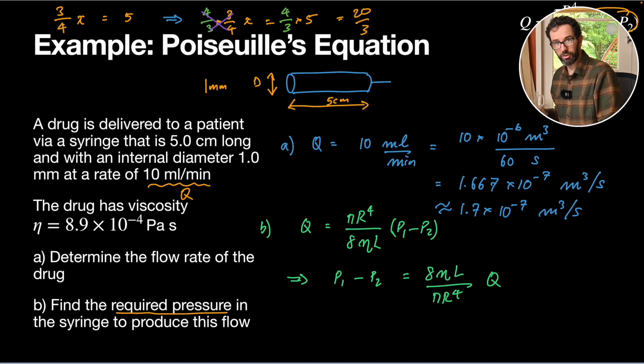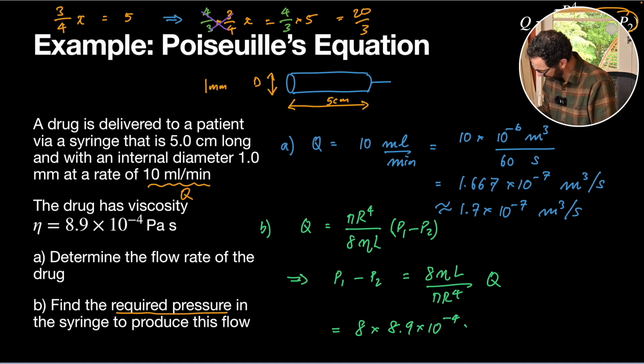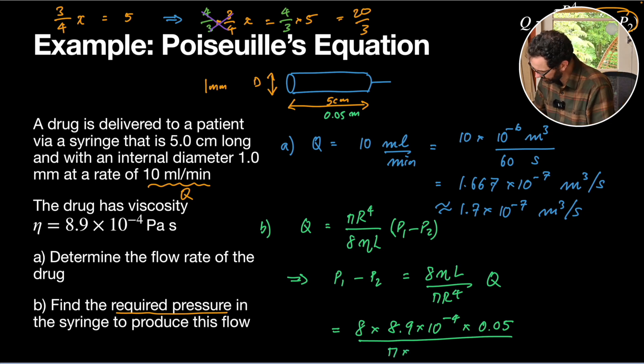To answer our question, we just got to substitute everything in. So that will be equals eight eta L, eight times viscosity is given to us as 8.9 times 10 to the negative four, times our length in meters. So that's going to be 0.05 meters, times 0.05 divided by pi times our radius. Now radius is half the diameter, so r will be 0.0005 meters. That's half a millimeter expressed in meters. So it's going to be times 0.0005 to the power of four. All times our flow rate Q, times 1.667 times 10 to the negative seven.